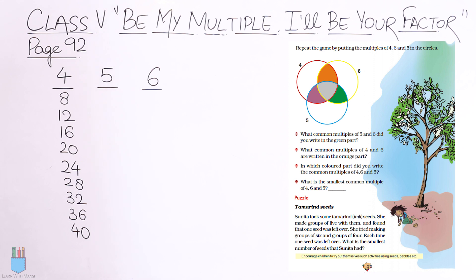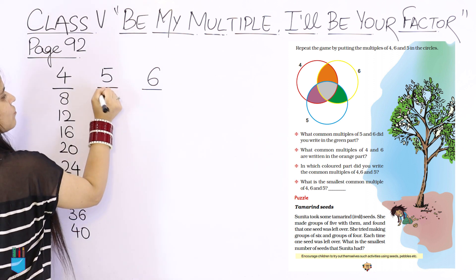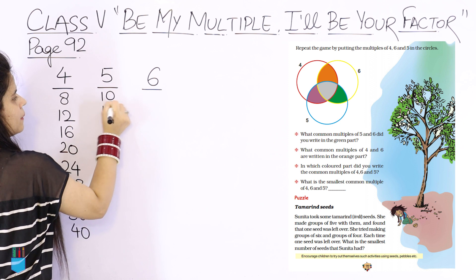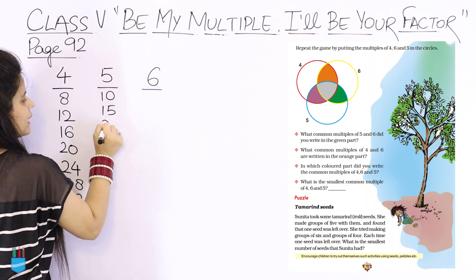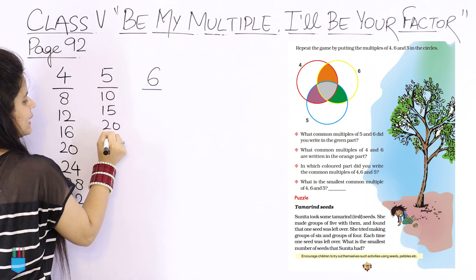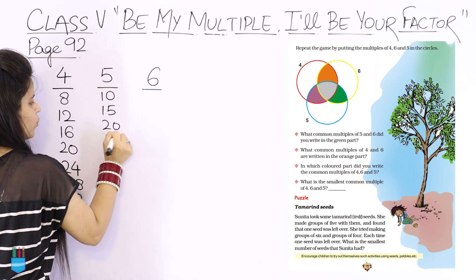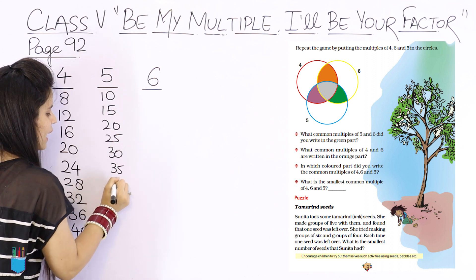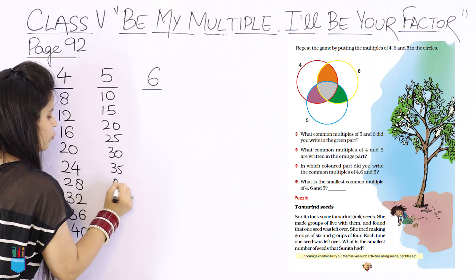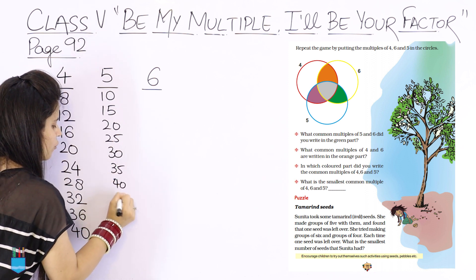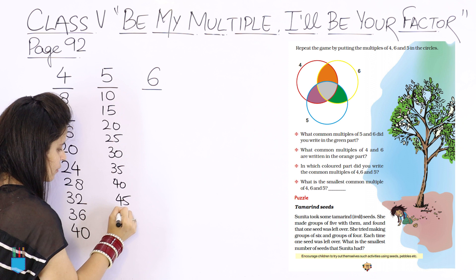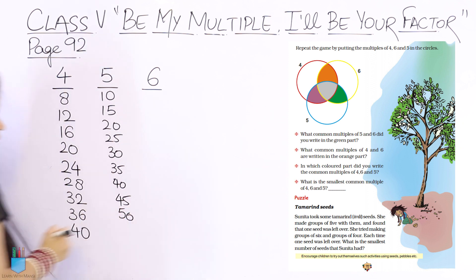Now for 5, we have: 5, 10, 15, 20, 25, 30, 35, 40, 45, 50.